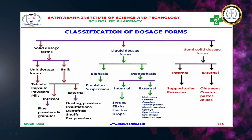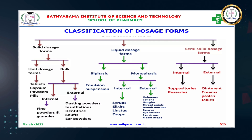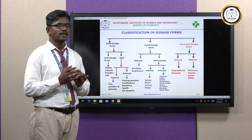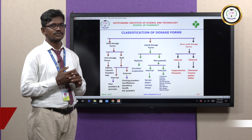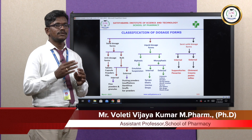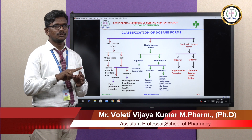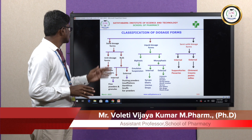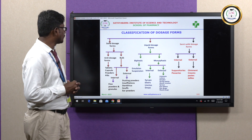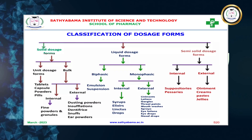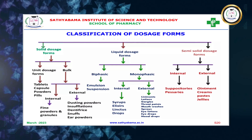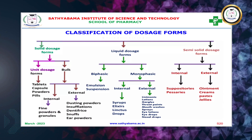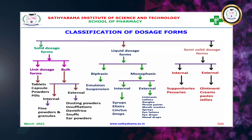One is the solid dosage form, next is the liquid dosage form, and the third is the gaseous type of dosage form. In between solid and liquid, the semi-solid dosage form is also there. Solid dosage forms are classified into two types: unit dosage form and bulk dosage form.